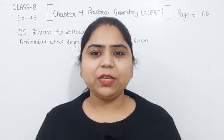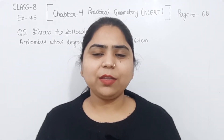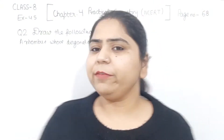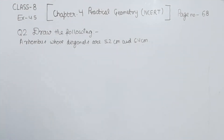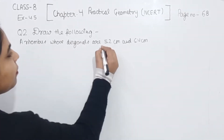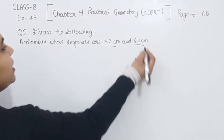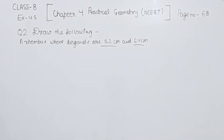Hello everyone, this is Preeti. We are going to solve another question from exercise 4.5, page number 68, question number 2. Draw the following: we have to draw a rhombus whose diagonals are 5.2 cm and 6.4 cm.